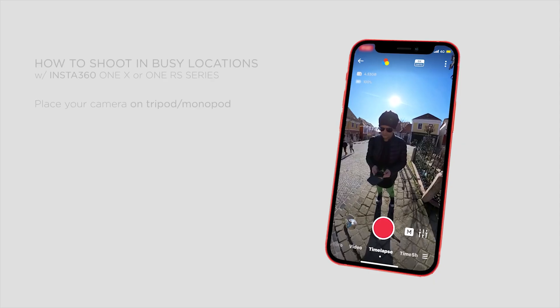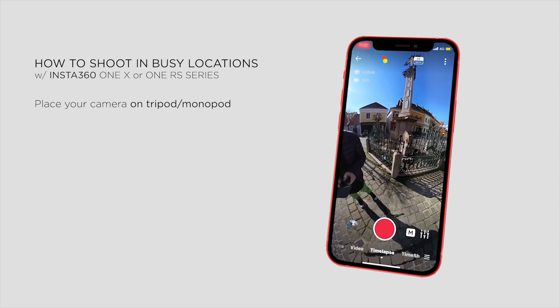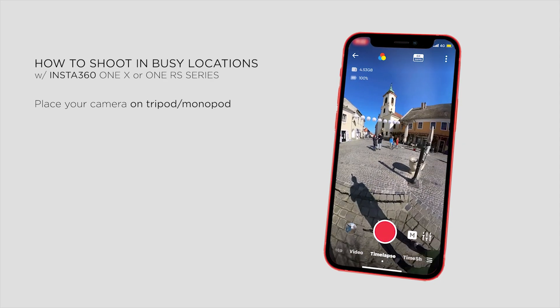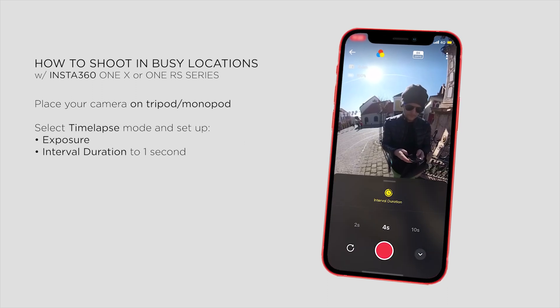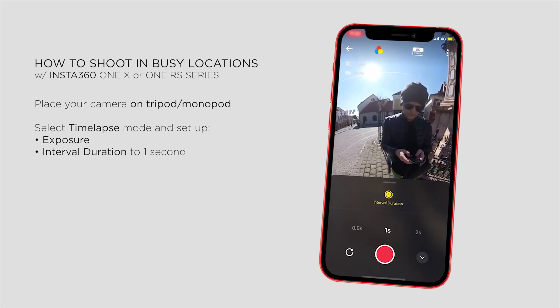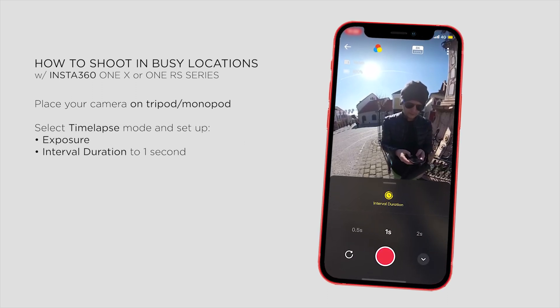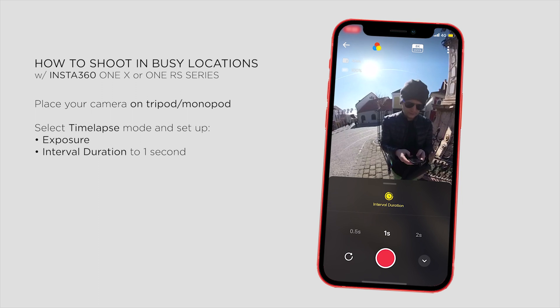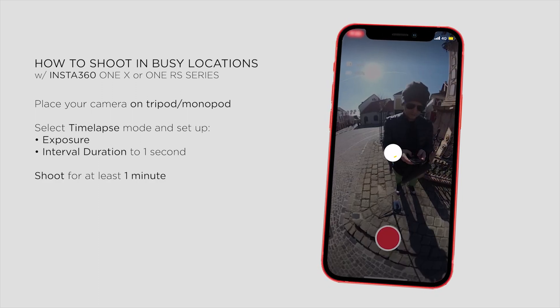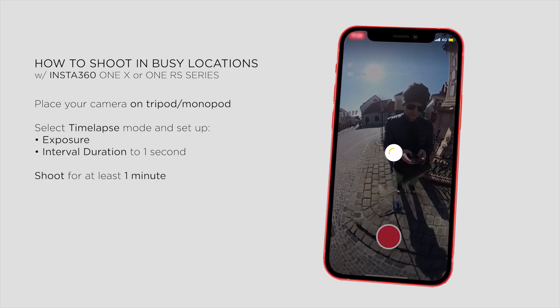I put my Insta360 camera on a tripod or a steady monopod and switched to timelapse mode, setting the interval duration to 1 second. Then I shoot for a little bit longer than 1 minute, depending on how busy the location is.